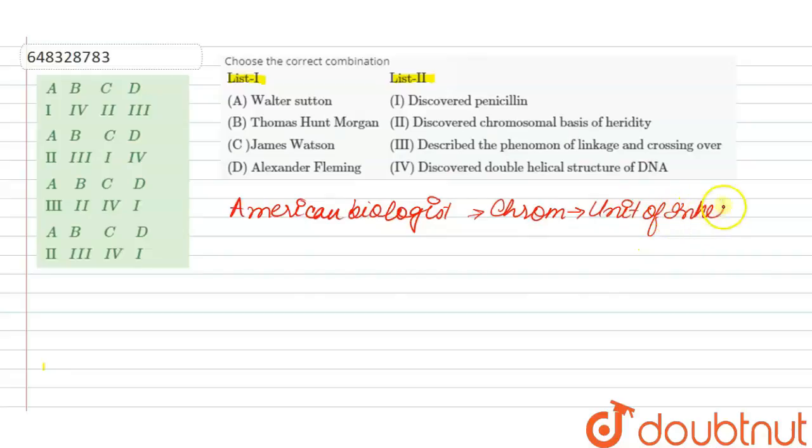And occur in distinct pairs. So he developed the hypothesis called the Chromosome Theory of Inheritance in 1903 and concluded that chromosomes contain hereditary units and their behavior during meiosis is random. So with A, option number 2 is the correct match.